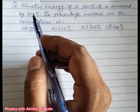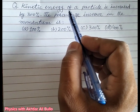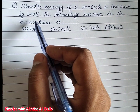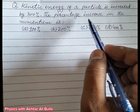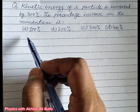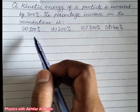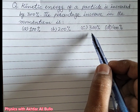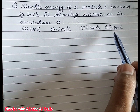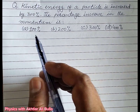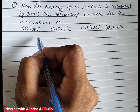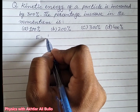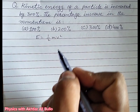The question is: kinetic energy of a particle is increased by 300%, the percentage increase in the momentum is — A: 100%, B: 200%, C: 300%, D: 400%. The kinetic energy is given by E = ½mv².